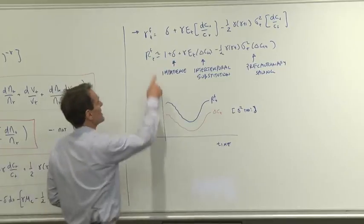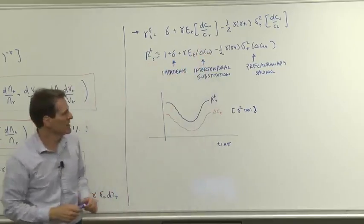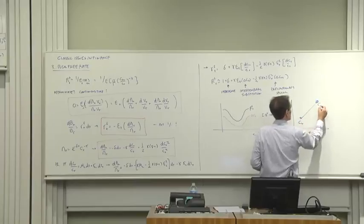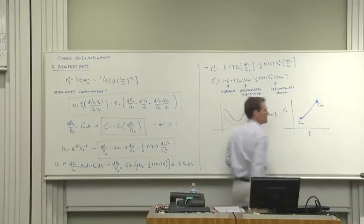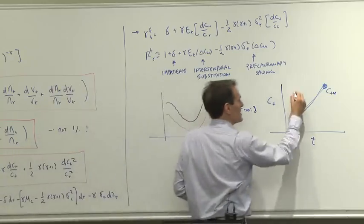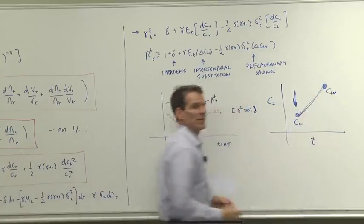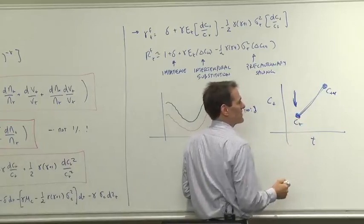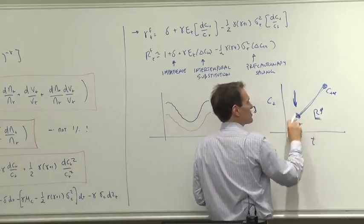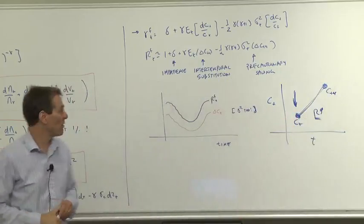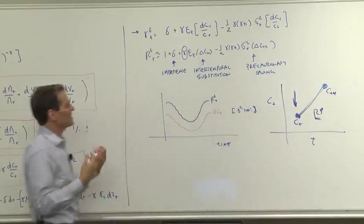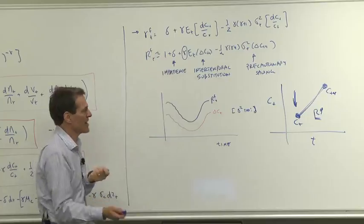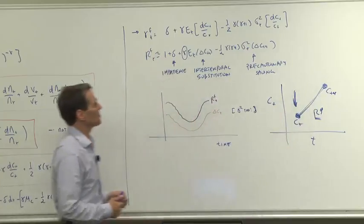Next term, intertemporal substitution. This says that interest rates are higher when consumption growth is higher. Now let's think about that. That seems kind of strange. Think about consumption growing at CT to CT plus 1. Why do you have it? And if that's a high consumption growth, why are interest rates high? Well, high consumption growth means that consumption is low today. If you knew you were going to be really rich tomorrow, why not go out and have a nice dinner tonight? Well, in order to keep you from consuming all of that stuff today and waiting till tomorrow, we have to pay you a high interest rate to get you to substitute consumption from today until tomorrow. Gamma here acts as the intertemporal substitution elasticity.